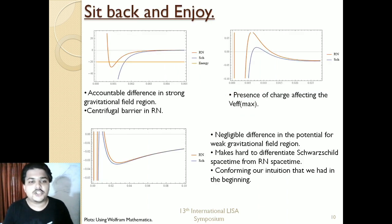Now here is the comparison of potentials in RN spacetime and Schwarzschild spacetime for different regions. The first image is the region for strong gravity regions, and we can see that our intuition is being confirmed. There is a huge difference between the potential of the RN spacetime and the Schwarzschild spacetime. There is a centrifugal barrier that prevents a particle from falling into the black hole unless the angular momentum of the particle is zero. The second image shows the effect of charge on the position of the V maximum.